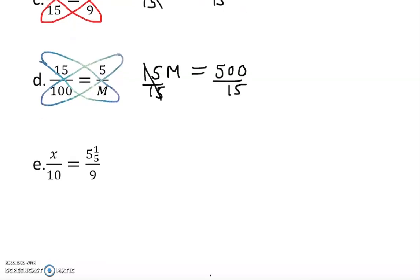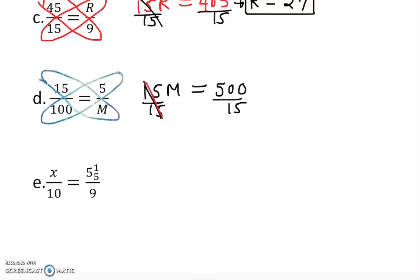We have M equal to 500 over 15, which should give you approximately 33.33. I'm using approximation because I'm rounding things up, or you can convert into mixed fraction and put down equal—that's up to you.